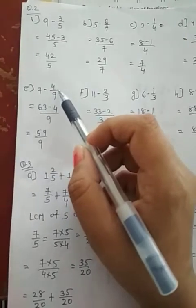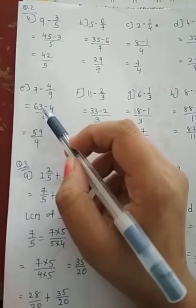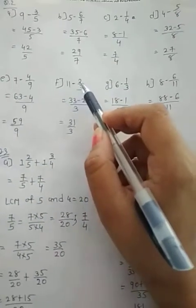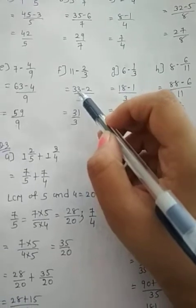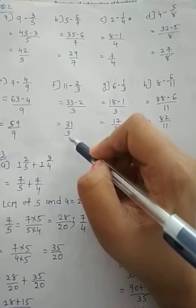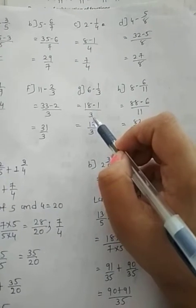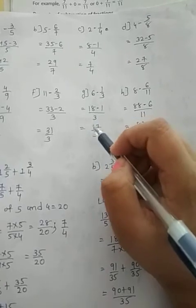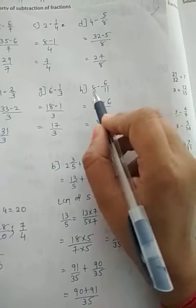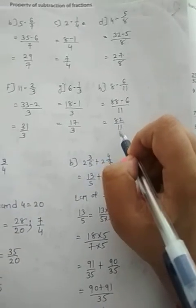E. 7 minus 4 divided by 9. 9 times 7 is 63 minus 4. 63 minus 4, 59 whole divided by 9. F. 11 minus 2 divided by 3. 11 times 3 is 33 minus 2, whole divided by 3. 33 minus 2, 31 divided by 3. G. 6 minus 1 divided by 3. 6 times 3 is 18 minus 1, whole divided by 3. 18 minus 1, 17 divided by 3. H. 8 minus 6 divided by 11. 11 times 8 is 88 minus 6, whole divided by 11. 88 minus 6, which is 82, divided by 11.